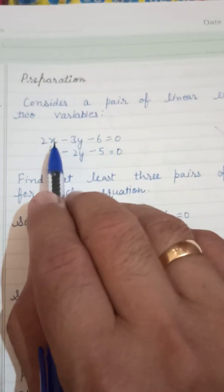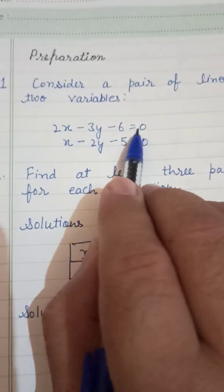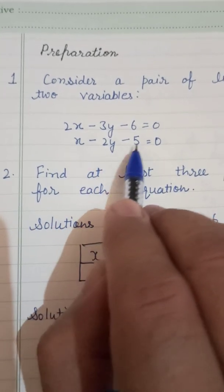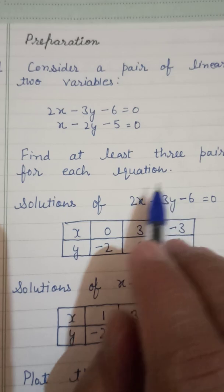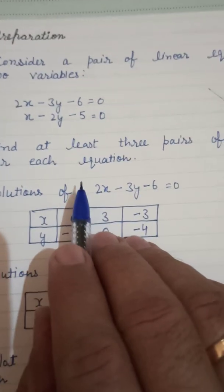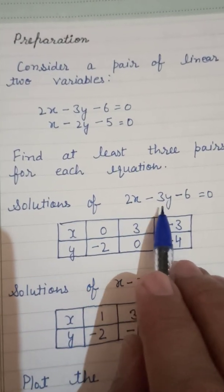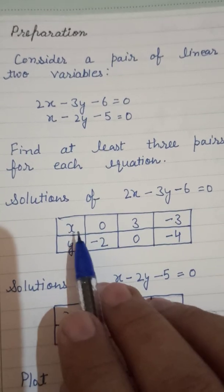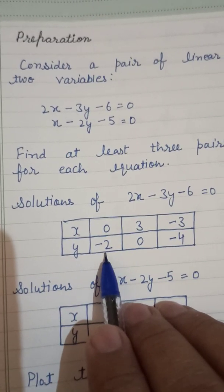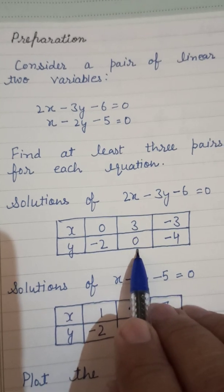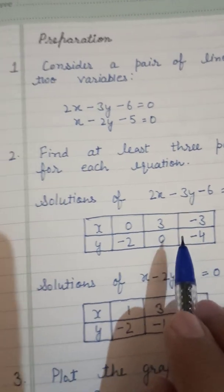Consider the first pair: 2x - 3y - 6 = 0 and x - 2y - 5 = 0. We find at least three pairs of solutions for each equation. For the first equation 2x - 3y - 6 = 0: when x = 0, y = -2; when x = 3, y = 0; when x = -3, y = -4.